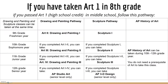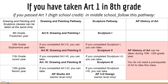If you took Art 1 in 8th grade and passed it, you've earned that high school credit and this is the pathway you can take. Since you've already completed the entry-level art class, you can dive into Art 2, Drawing and Painting 1, and Sculpture 1 your freshman year. Your sophomore year, if you've completed Art 1 and 2, you can take Art 3, Drawing and Painting 2, and Sculpture 2. It also opens the door to AP History of Art, which is offered for 10th, 11th, and 12th graders with no prerequisites.